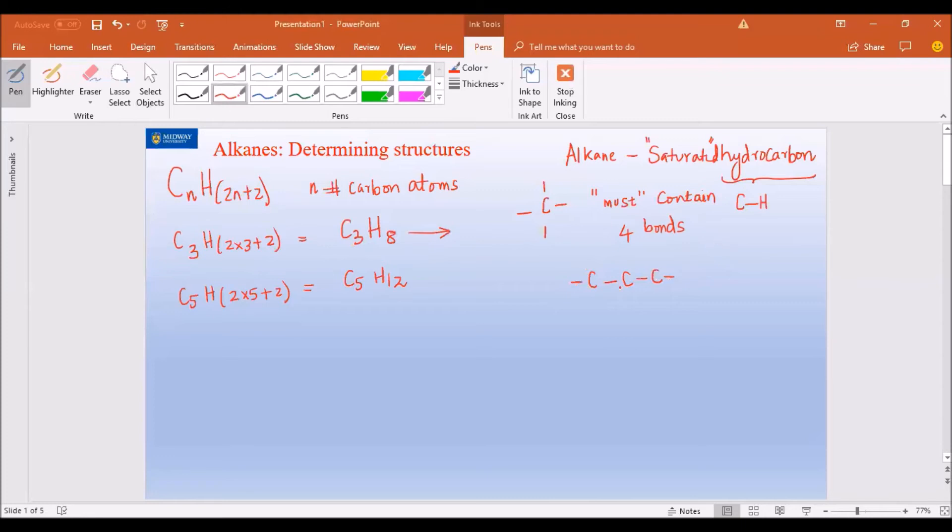People also refer this as catenation. Catenation means long chain. Imagine a train. As I said here, a carbon must contain four bonds, right? So draw one above anywhere you see, draw one above and one below. There we go. Now, hydrogen can have only one bond that can bond to a carbon. If you count, how many hydrogens do we have? Eight. So start putting hydrogens wherever you see a bond. And that's just that simple.